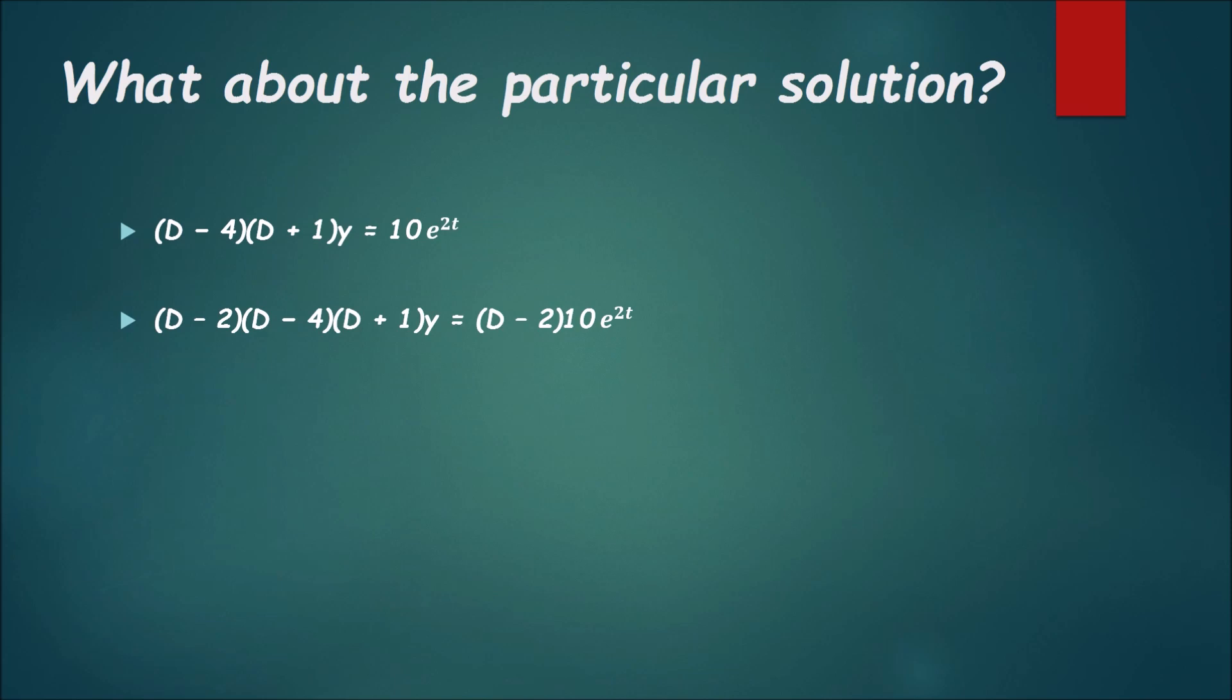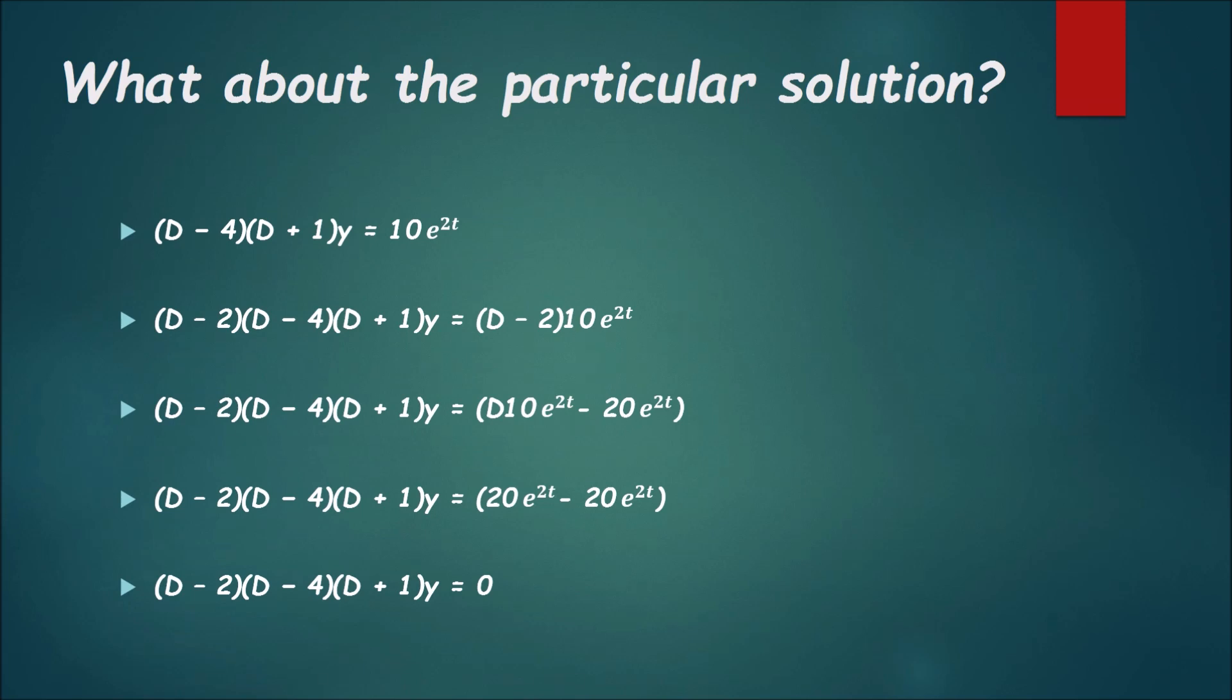My next step, I'm leaving the left side of my equation the same, but I'm distributing the 10e to the 2t inside of my d minus 2. Now remember what I said earlier, the d represents derivative. So when I take the derivative of 10e to the 2t I will get 20e to the 2t, and it's minus another 20e to the 2t, so therefore they will cancel. There's my annihilation part there. See, on my left side everything stayed the same.